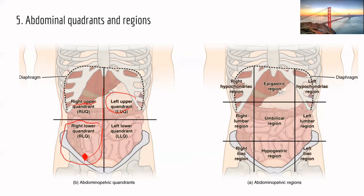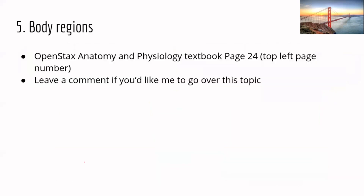The left upper quadrant contains the majority of the stomach, and the lower quadrants mostly contain the intestines. There are also nine abdominal regions. For more information, see the OpenStax free textbook, page 24. Leave a comment if you'd like a full walkthrough of the regions.